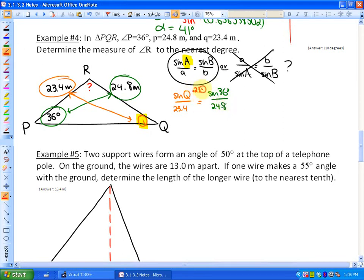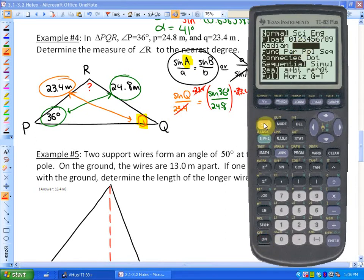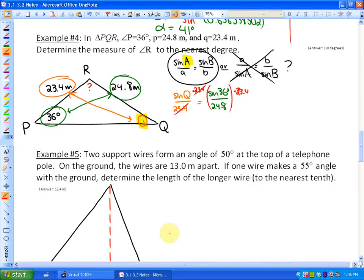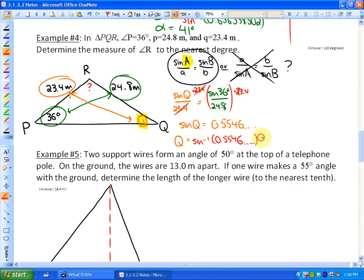To solve, we multiply both sides by 23.4. Make sure you use your calculator carefully and hit equals more often. Also, make sure your calculator is in degree mode. I'm going to do sine 36, hit equals, that's the value of sine 36. Now I'm going to divide it by 24.8, then times it by 23.4, so that gives me 0.5546. That's what sine Q is equal to. As we learned in the previous lesson, the opposite of sine is the sine inverse, so I would take the sine inverse of 0.5546. I press second sine of the answer and hit equals. To the nearest whole degree, that's 34 degrees, so angle Q is 34 degrees.